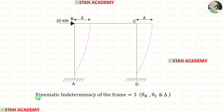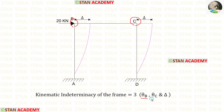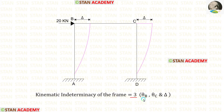Now let us find the kinematic indeterminacy of the frame. In this frame, at joint B there will be slope θB, and at joint C there will be slope θC. We know that this frame is subjected to sway towards the right side. So totally the kinematic indeterminacy is equal to 3: the slope θB, slope θC, and the sway delta.